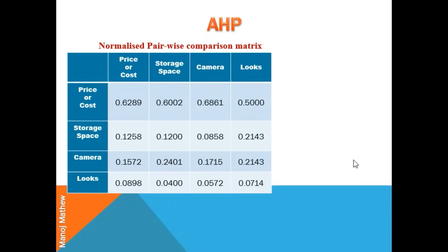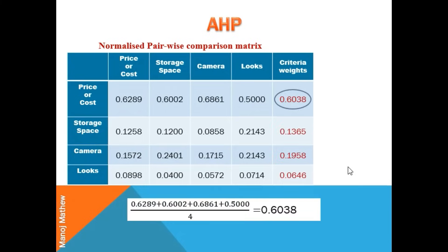This is the normalized pairwise matrix. The criteria weights are then calculated by averaging all the elements in each row — we add all the elements in a row and divide by the number of criteria, which gives the criteria weight.